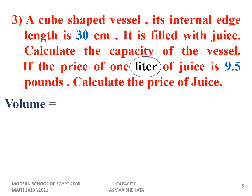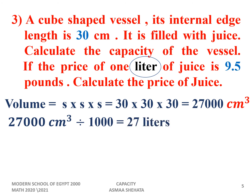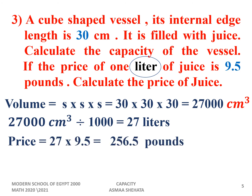The volume of the cube equals side × side × side = 30 × 30 × 30 = 27,000 centimeter cube. Now I want to change it to liters. Converting from centimeter cube to liter is small to big, so we divide by 1000. 27,000 ÷ 1000 = 27 liters. Then to get the price: 27 × 9.5 = 256.5 pounds.